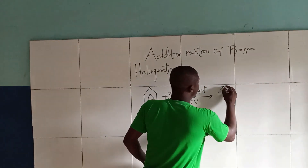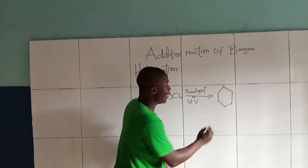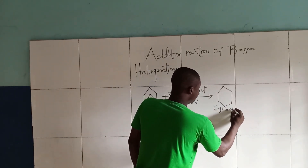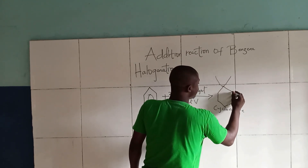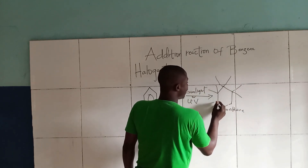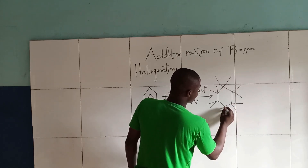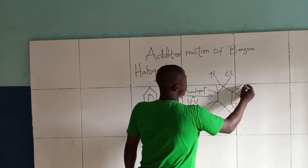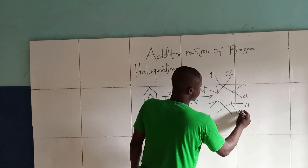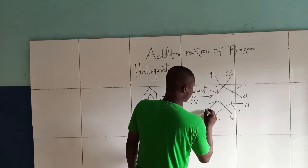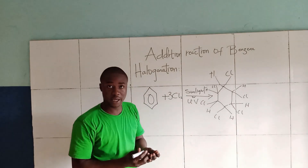Simply this. Recall, whenever Benzene undergoes an addition reaction, we are going to get a cyclohexane. Since Chlorine is the addendum, we are going to get a cyclohexane with Hydrogen and Cl substituents — Hydrogen, Cl, Hydrogen, Cl, Hydrogen, Cl — alternating around the ring. This is a cyclohexane.